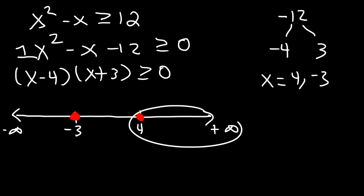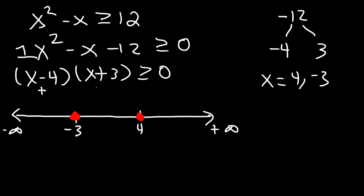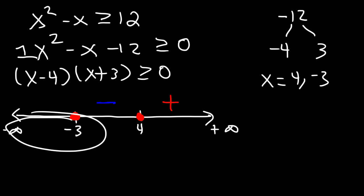Let's plug in numbers and test the signs. Pick a number between 4 and infinity — let's try 5. 5 minus 4 is positive, 5 plus 3 is positive, and two positives multiplied give a positive result. Now between negative 3 and 4, let's try 0. 0 minus 4 is negative, 0 plus 3 is positive, and a negative times a positive gives a negative result. Between negative infinity and negative 3, let's try negative 4. Negative 4 minus 4 is negative, negative 4 plus 3 is negative, and two negatives multiplied give a positive result.